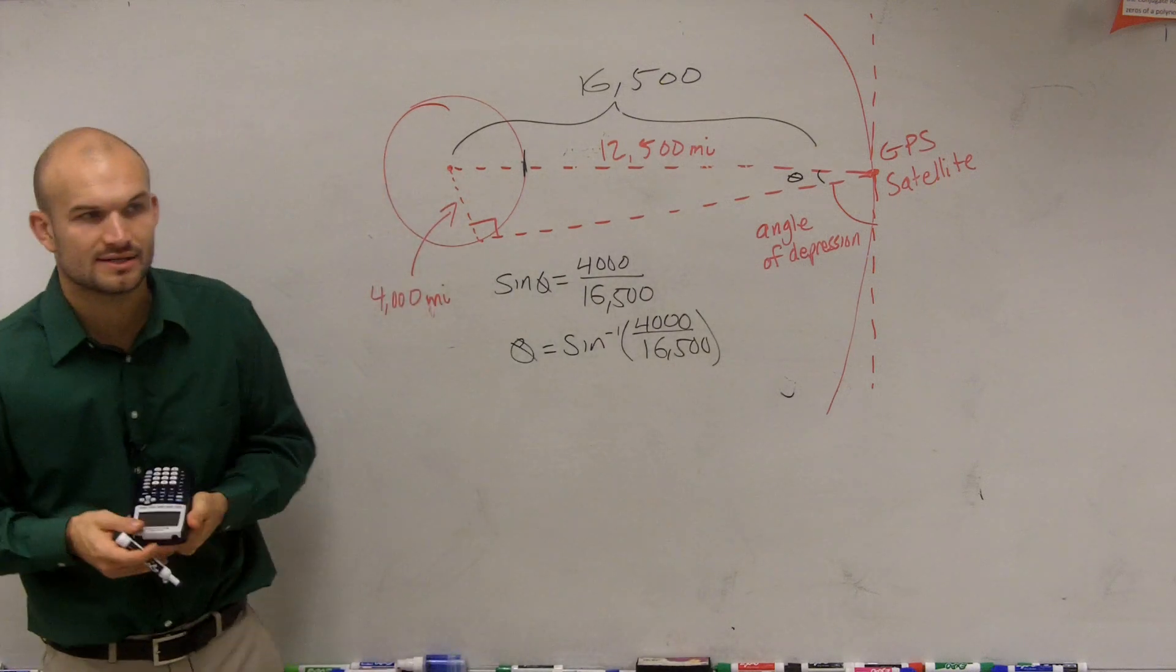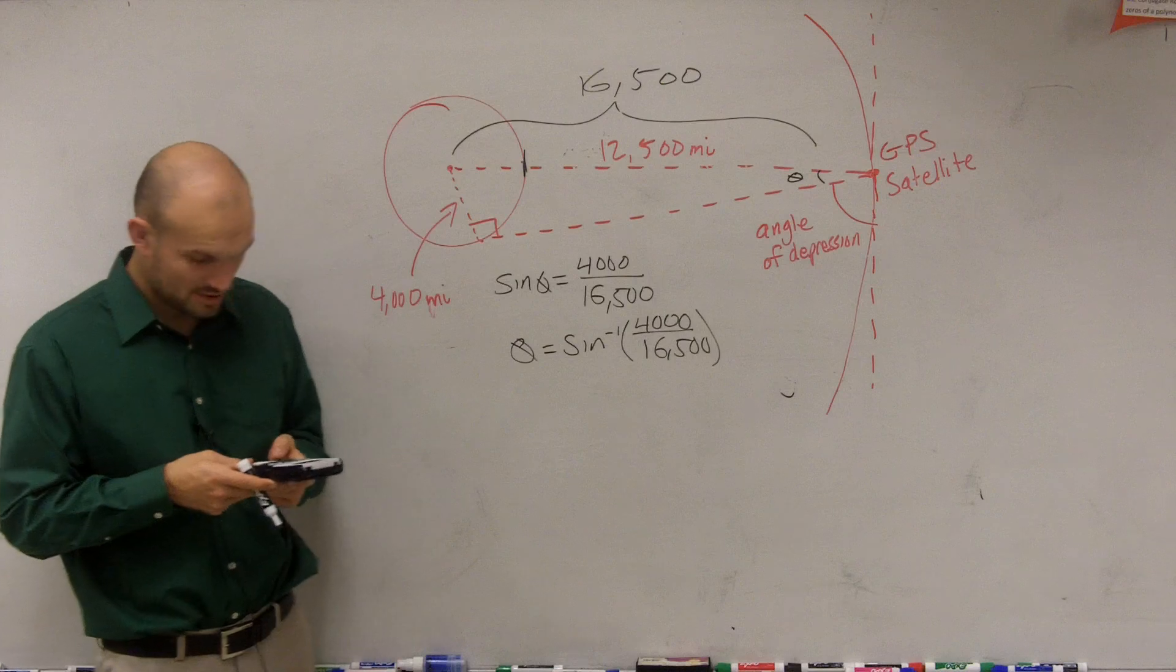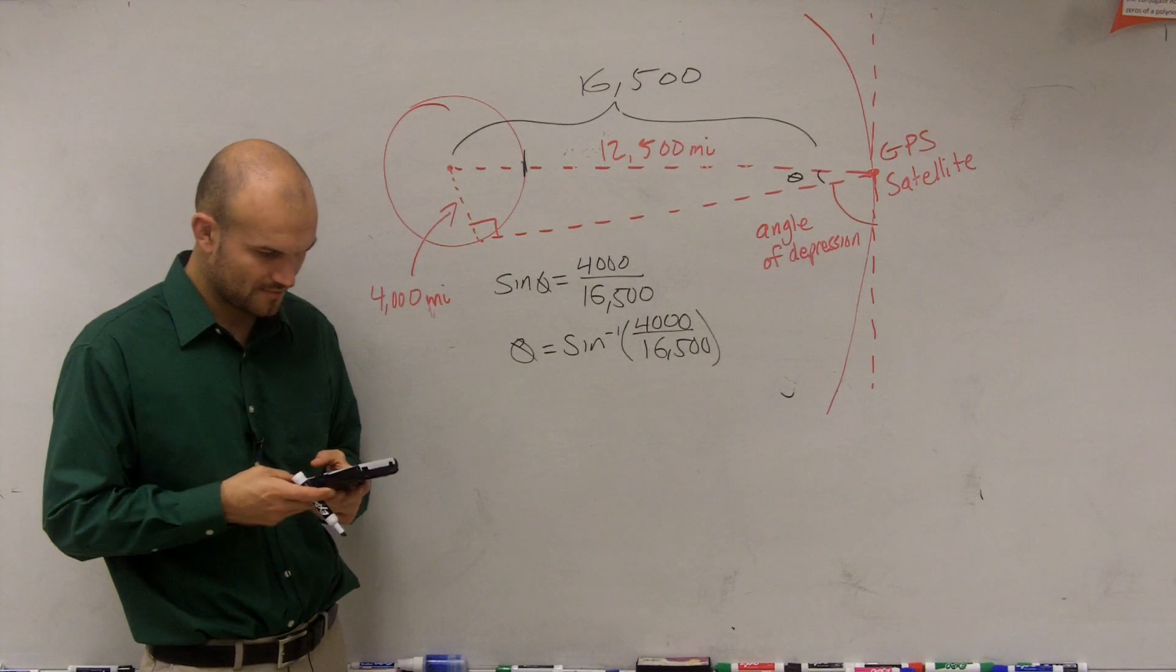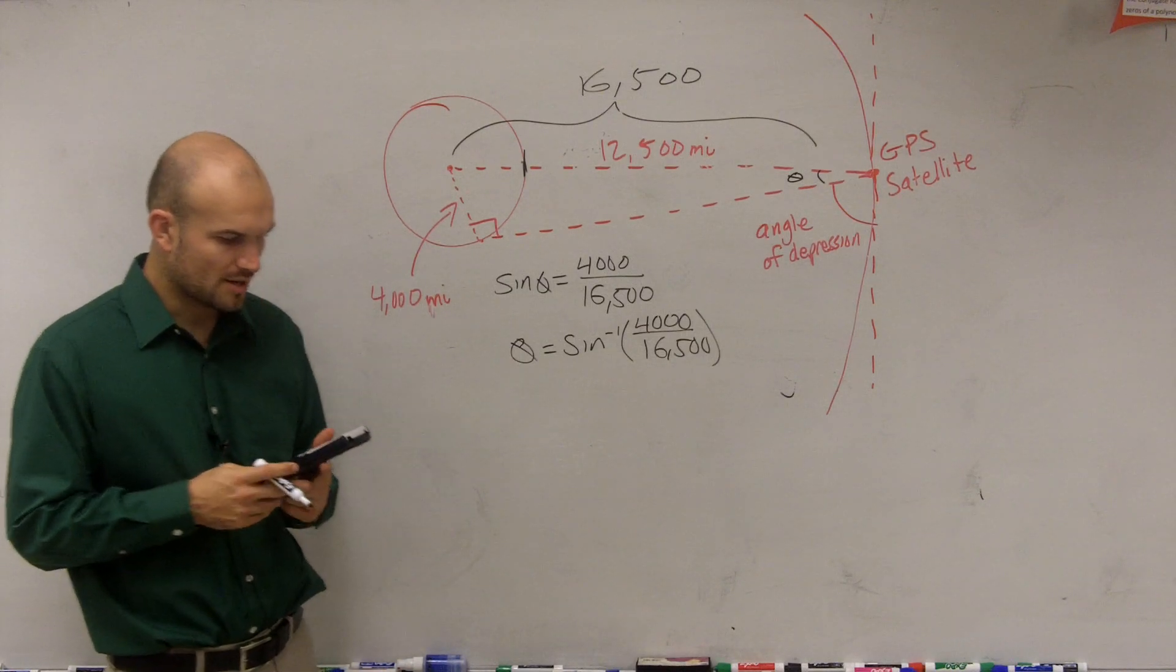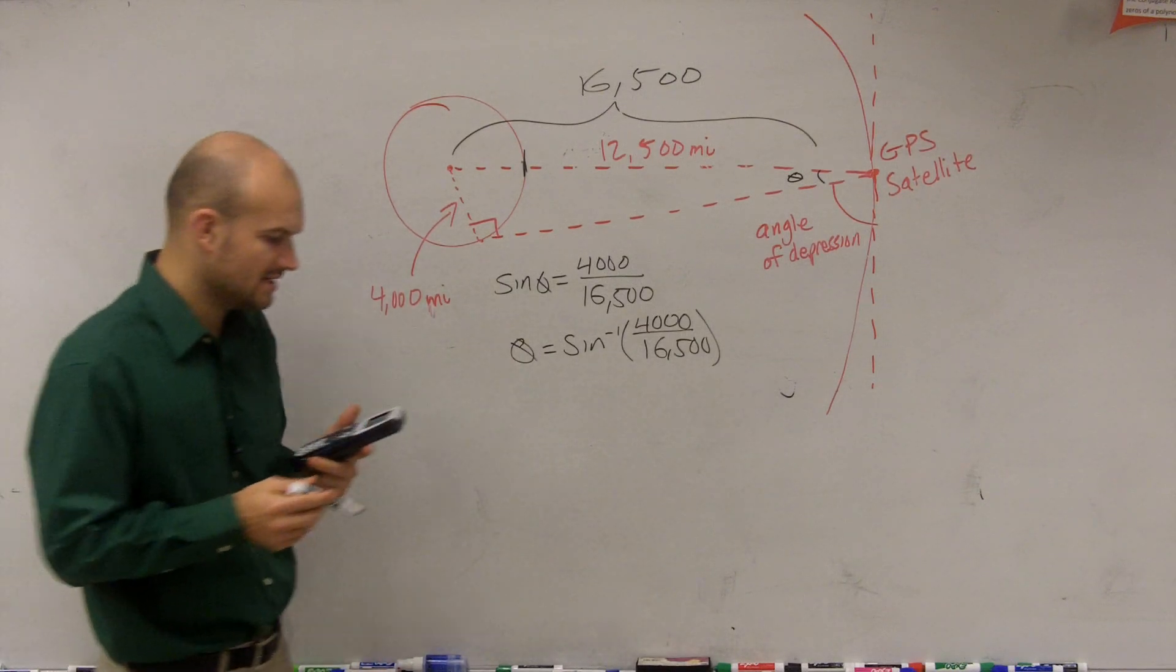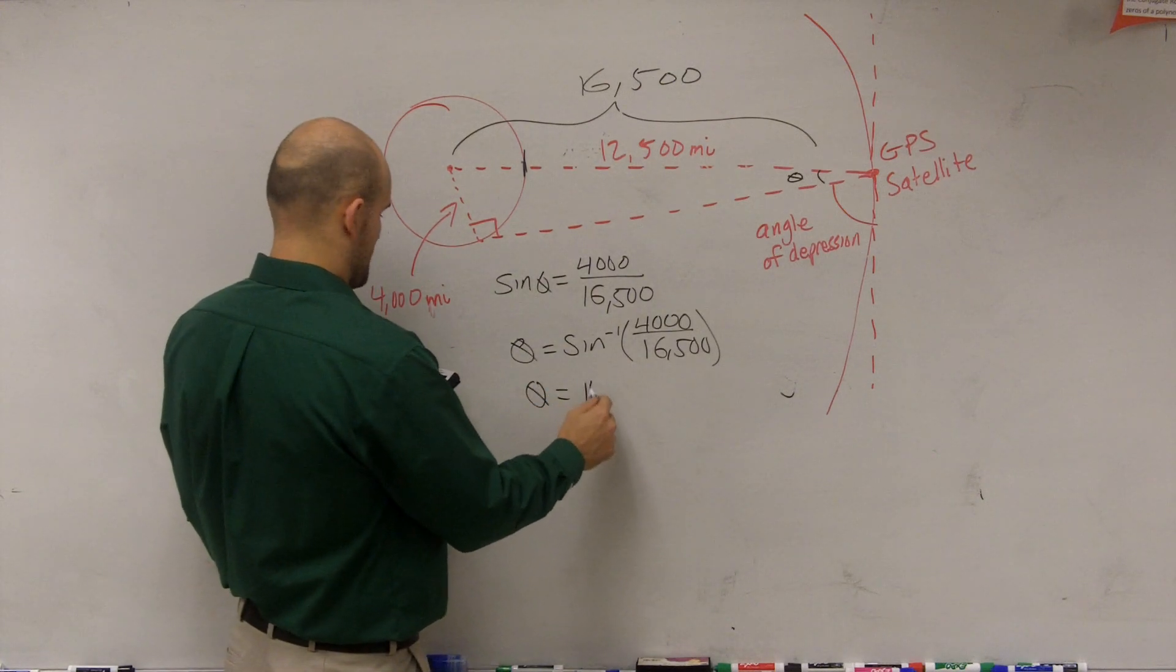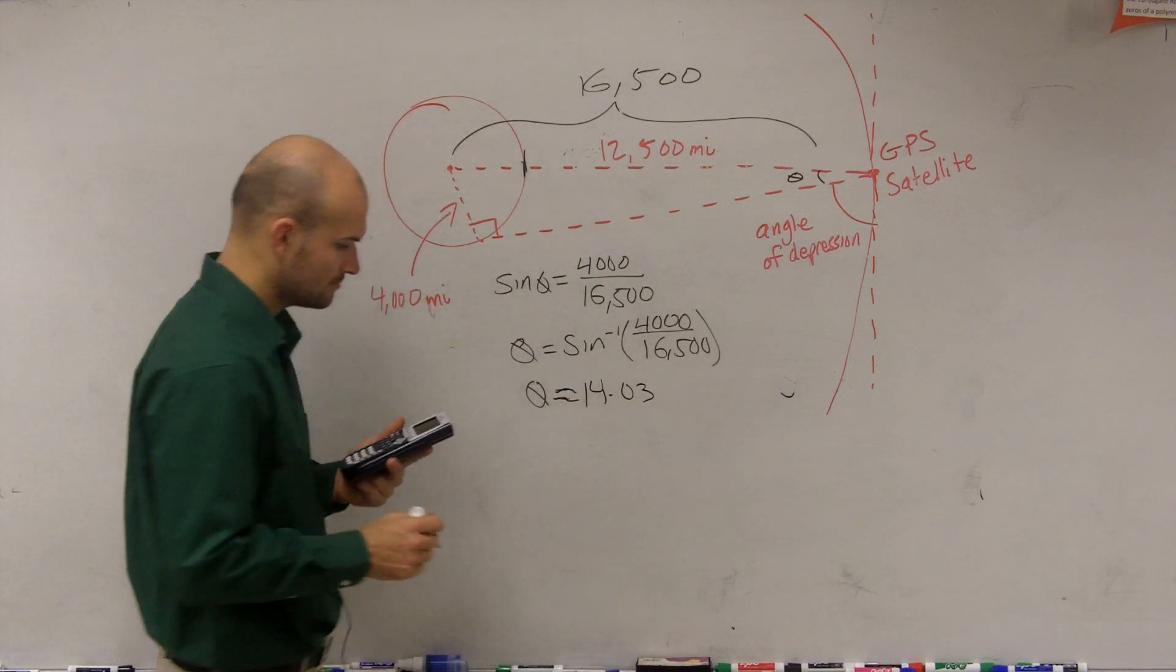Right? Because we want to figure out what theta is. So this is in our definitions we worked with in 4.7. So therefore, I'm just going to take 4,000 divided by 16,500, then we'll do inverse sine. So I'm going to get an angle of 14.03. So theta equals 14.03, or approximately.